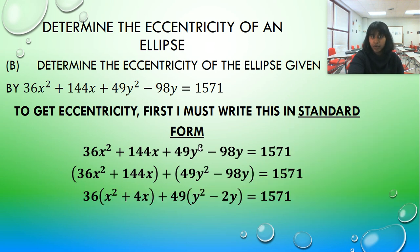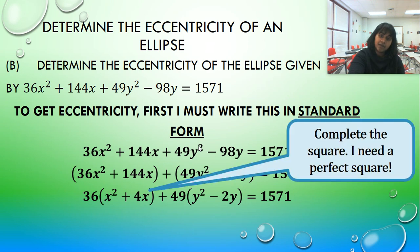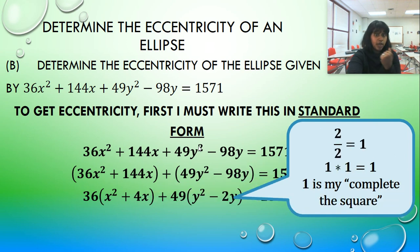In fact, 36 goes into 144 four times, and 49 is two times to get to 98. So how do I complete this perfect square? Four divided by two squared is still four. Great. We completed our perfect square. But two divided by two is one. One squared is just one.